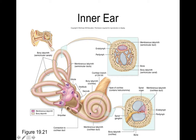We can divide the bony and membranous labyrinth into three main regions: the vestibule, semicircular canals, and the cochlea. The vestibule is the main part of the structure; the three semicircular canals project off the vestibule; and the cochlea is the snail-shaped structure coiled off to the side. All of this membranous labyrinth is associated with the vestibulocochlear nerve, cranial nerve number eight, which carries sensory information back to the brain for processing hearing and balance.